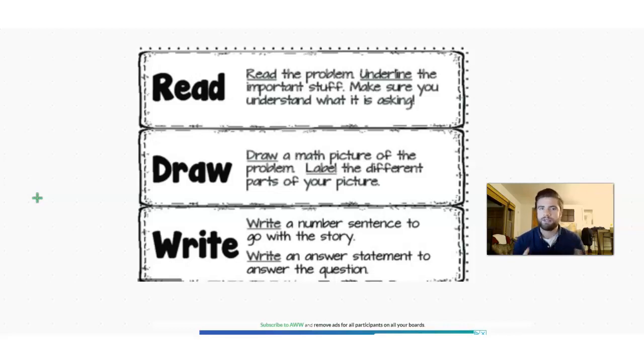There are three steps to this and they're just like they sound. The first part is reading the problem and underlining the important stuff. And we have to make sure we know what the problem is asking us to find. Next, we're going to draw a math picture of the problem and label different parts of our picture.